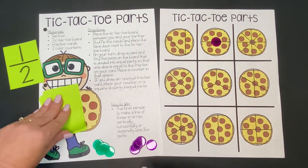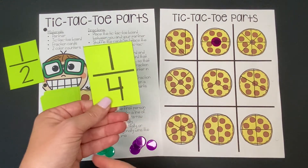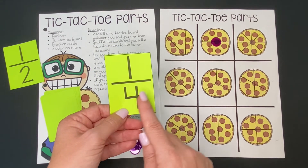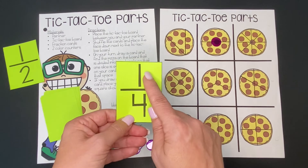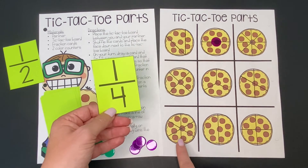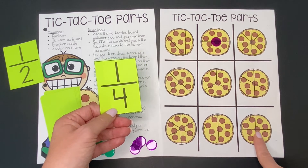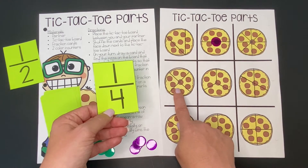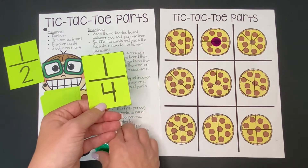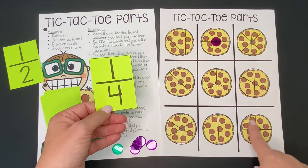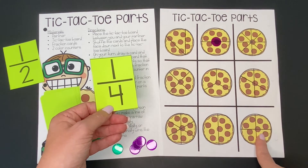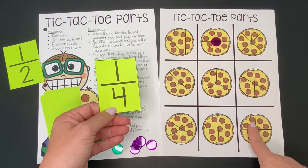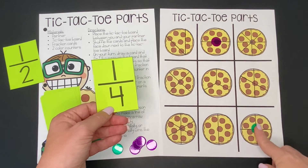Then our partner gets to go. They draw a card and it says one fourth. So they're looking for a pizza that's divided into four equal parts, and one slice of that would be one fourth of the pizza. Here are four equal parts. This one has four parts but they're not equal. Here are four equal parts. One slice of the pizza is one fourth of the pizza. They're going to put their green counter there.